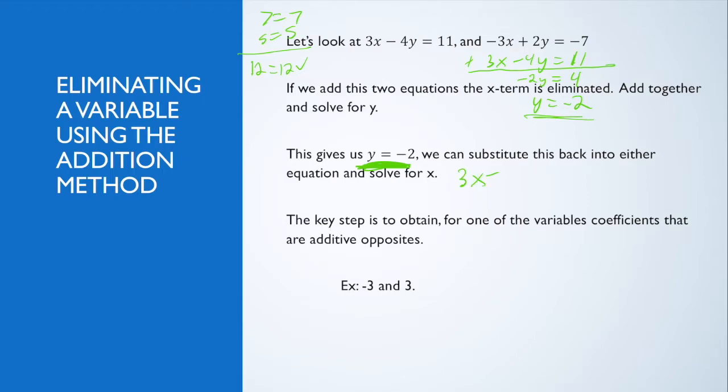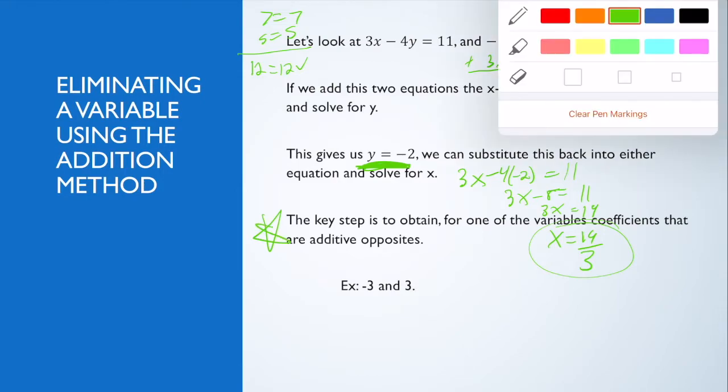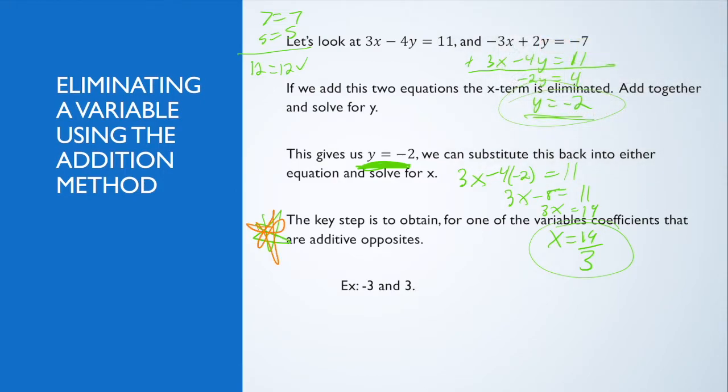If I have 3x minus 4 times negative 2 equals 11, then 3x plus 8 is 11. 3x equals 3, so x equals 1. Wait, let me recalculate. 3x minus negative 8 is 11, so 3x equals 19. x equals 19 thirds. That's not the nicest x value, but the point is I solved for where these two lines intersect. The key takeaway is to obtain for one of the variables coefficients that are additive opposites.